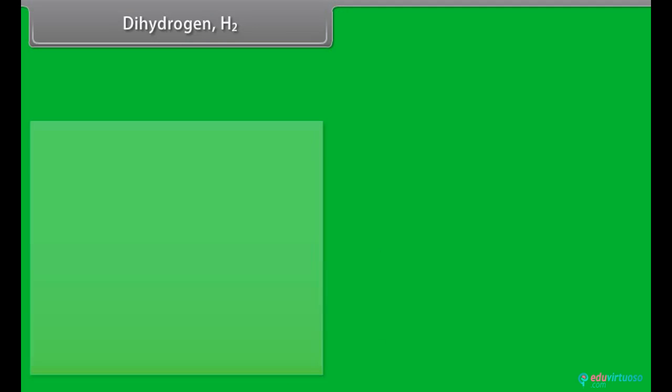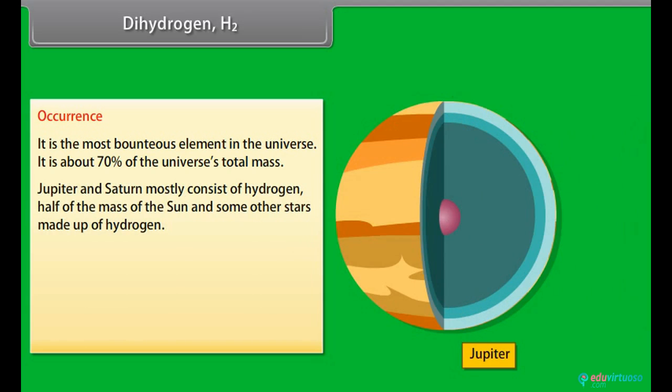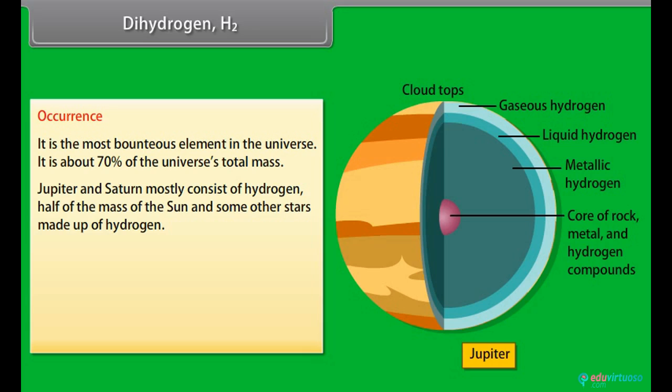Dihydrogen H2 Occurrence: Dihydrogen is the most bounteous element in the universe. It is about 70% of the universe's total mass. Jupiter and Saturn mostly consist of hydrogen. Half of the mass of the sun and some other stars made up of hydrogen.